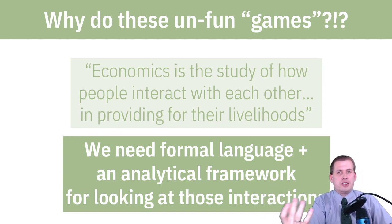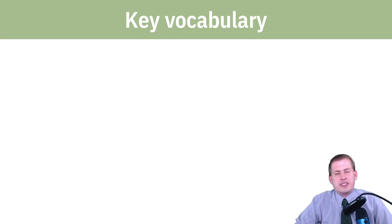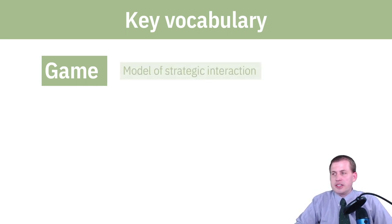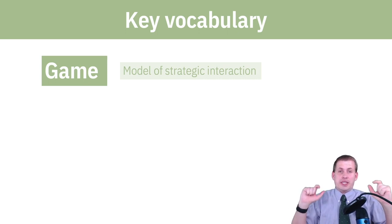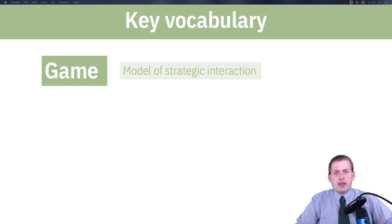That's all we're trying to measure here, and that's called a game for whatever reason. Some key vocabulary terms we need to remember: when we talk about a game, it's not like a board game or chess. It's a model of strategic interaction — if you have two people that interact with each other, it's how they actually end up interacting, what the payoffs are, and what the strategies are in what they actually do.